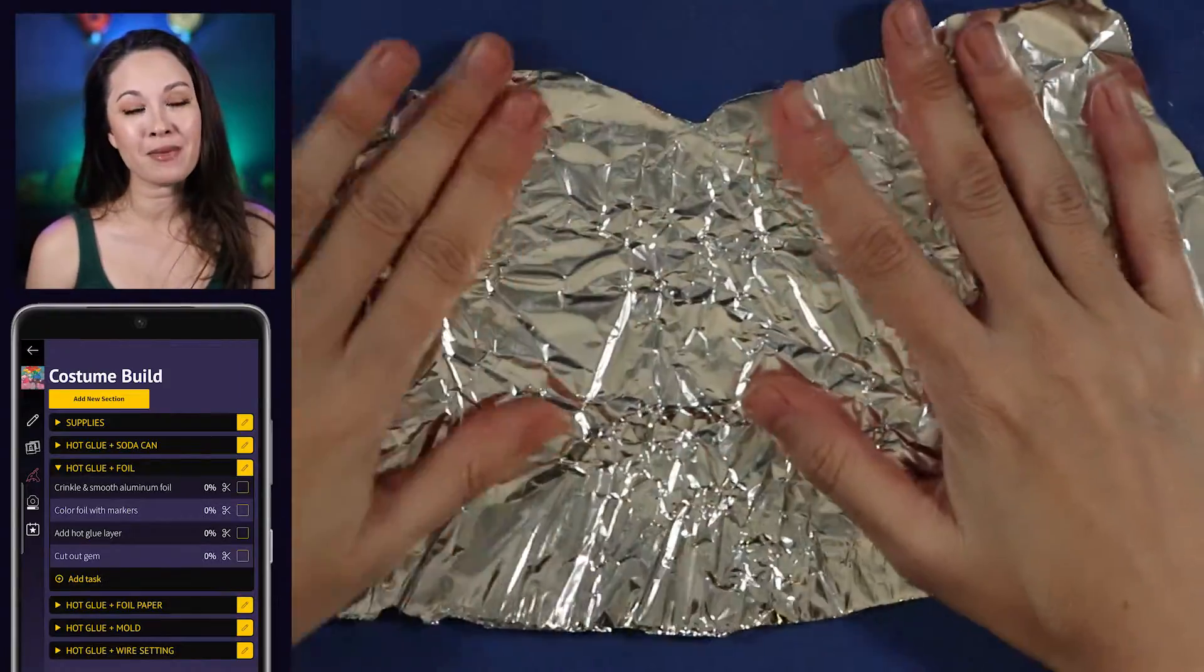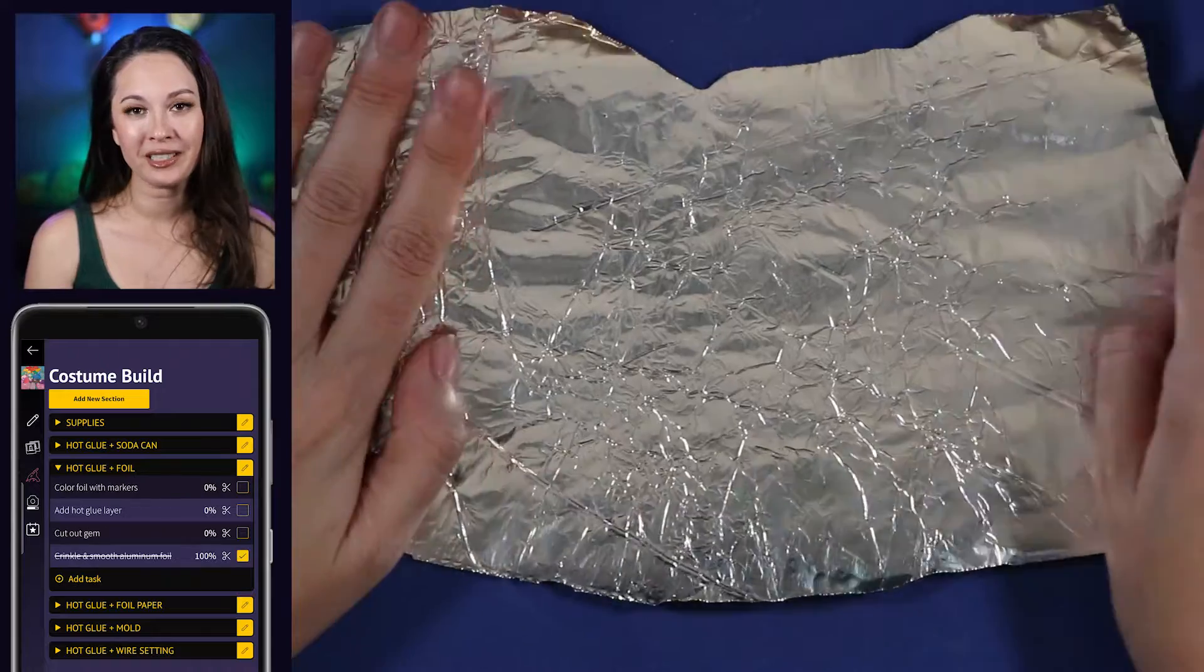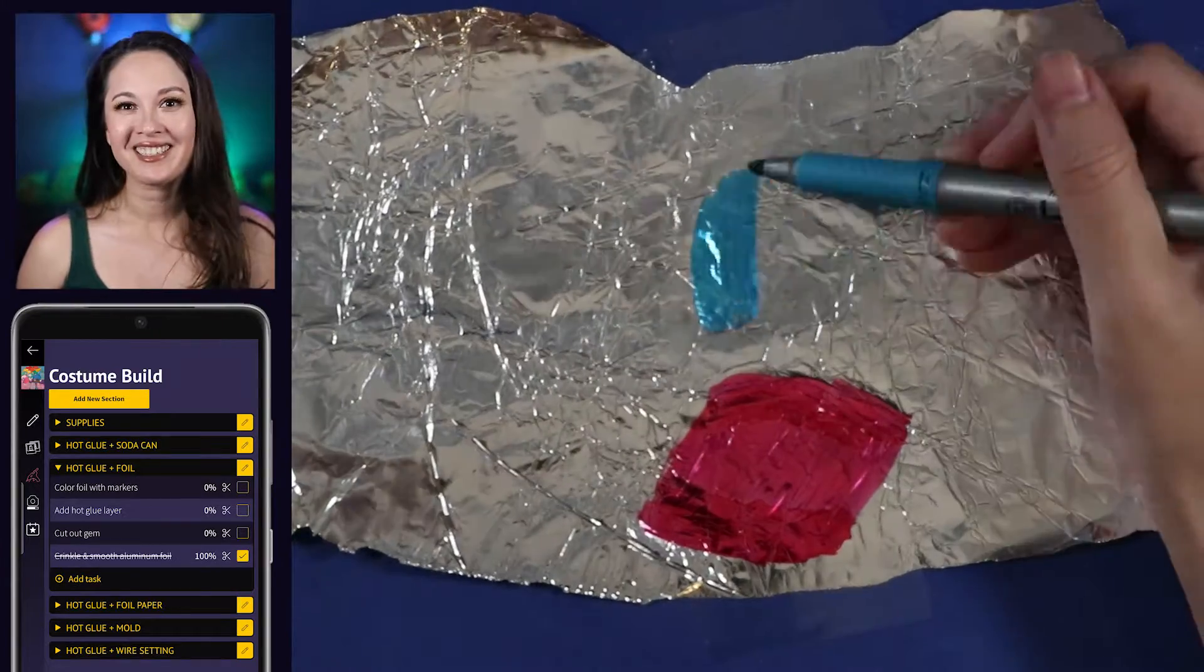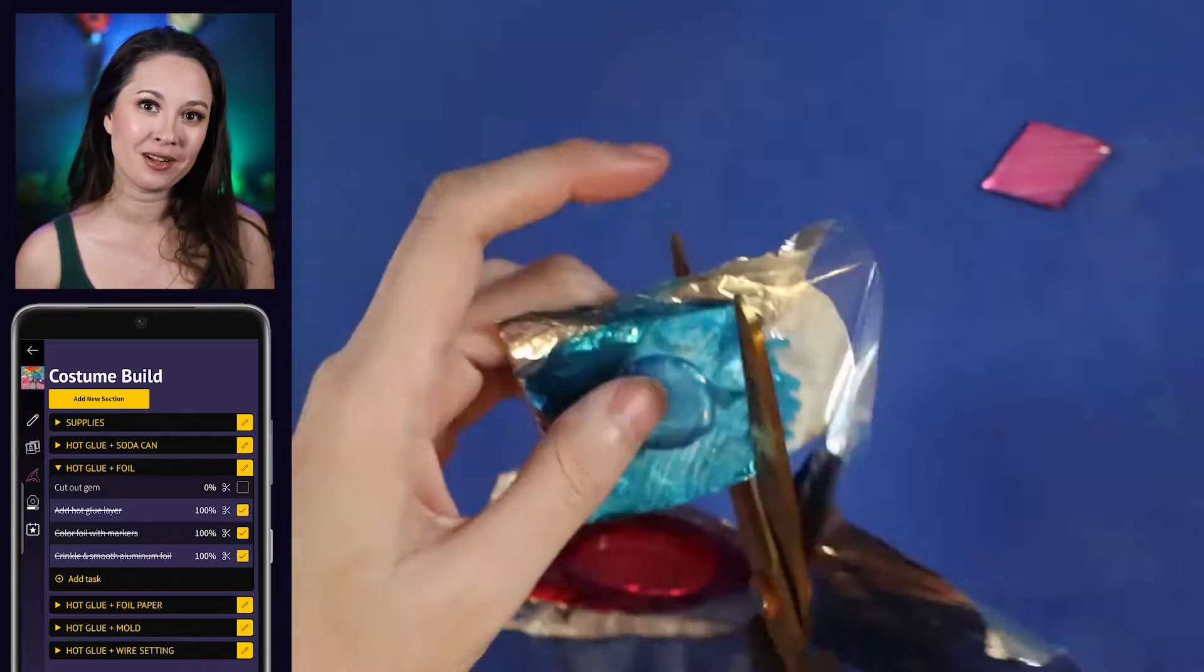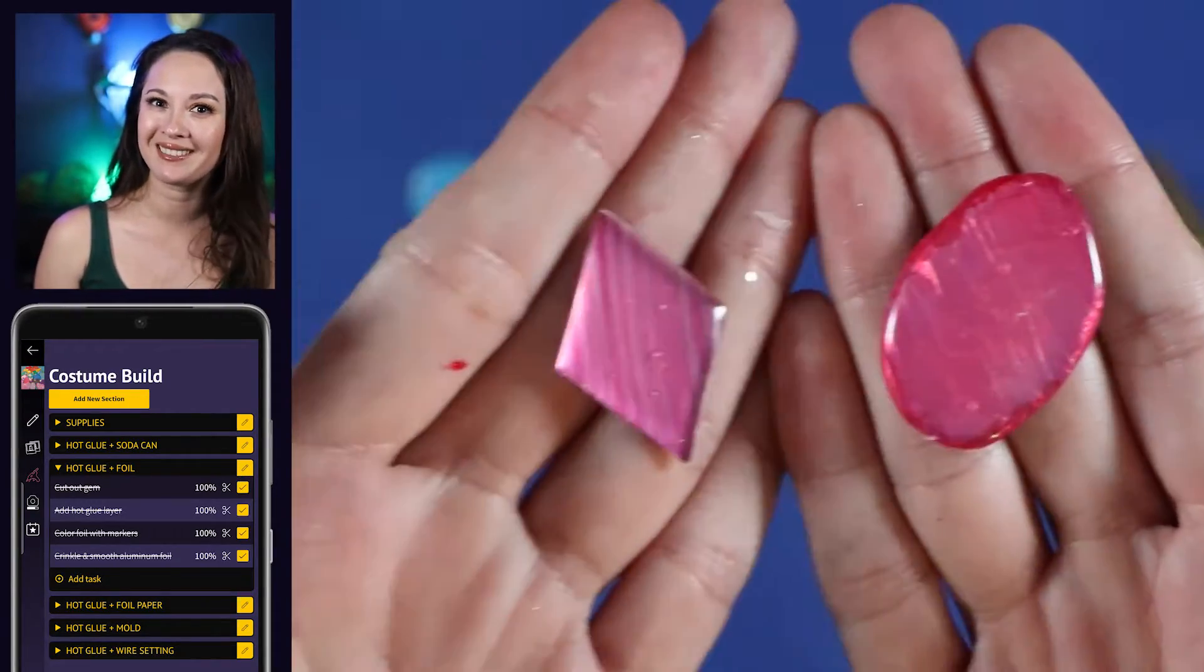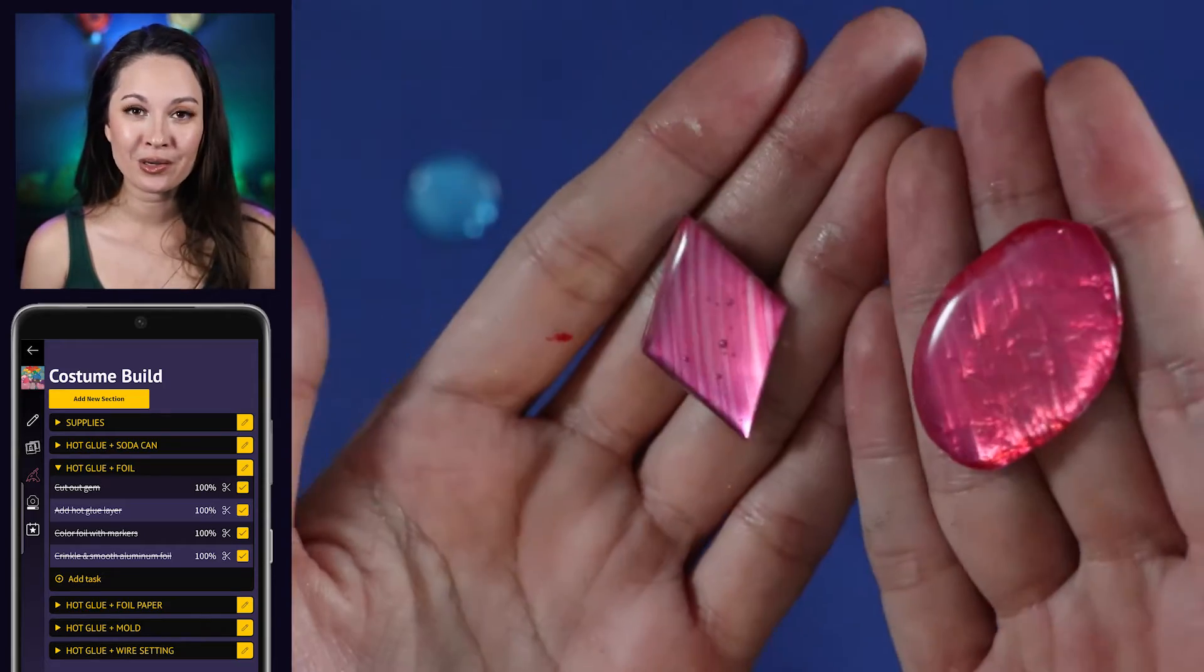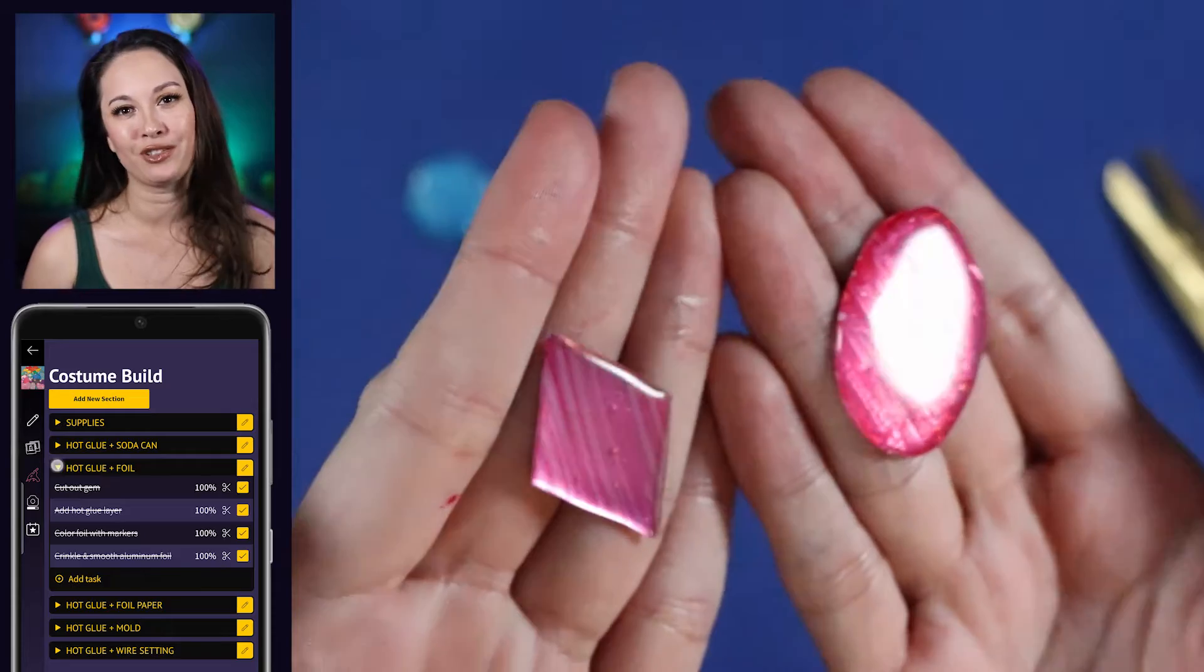You can also use basically the same method with aluminum foil. I think the effect looks best if you crinkle the foil and then smooth it and then color it. It is a flimsy material so you might want to seal the back with a bit of tape or clear nail polish. Here's how the hot glue and foil method worked out and compared to the soda can. In both of these you can see the marker stroke so you might either want to use a pretty runny marker or just keep it to smaller gems.